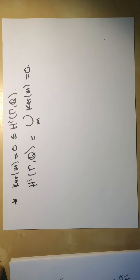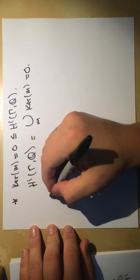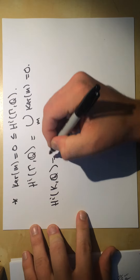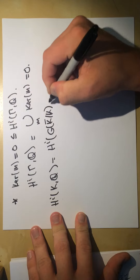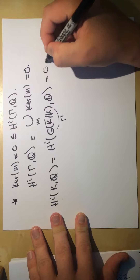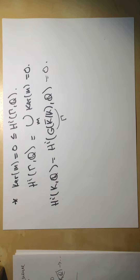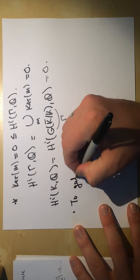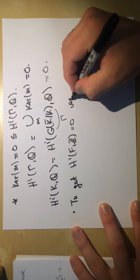This sub-proof shows Hⁱ(k, Q) = Hⁱ(Gal(k̄/k), Q) = 0 for all i. Now to prove H¹(F, Z) = 0 and the isomorphism Hⁱ(F, Q/Z) ≅ Hⁱ⁺¹(F, Z), we use the short exact sequence 0 → Z → Q → Q/Z → 0.